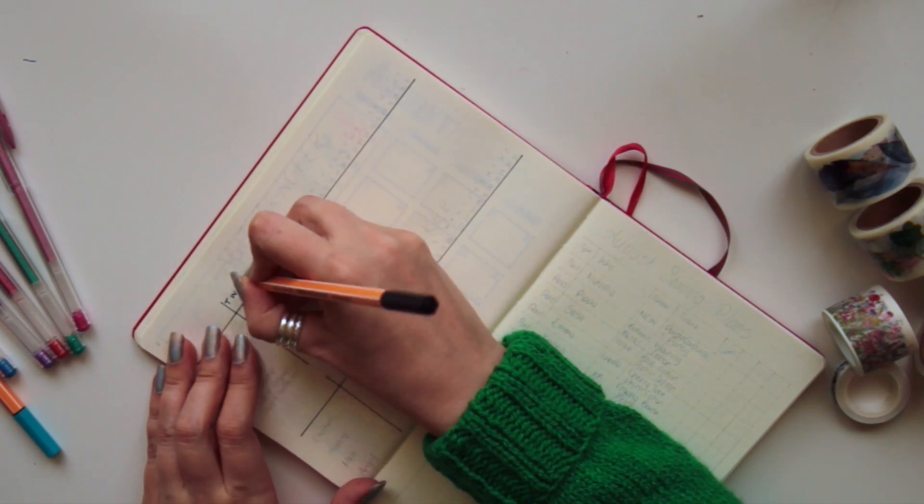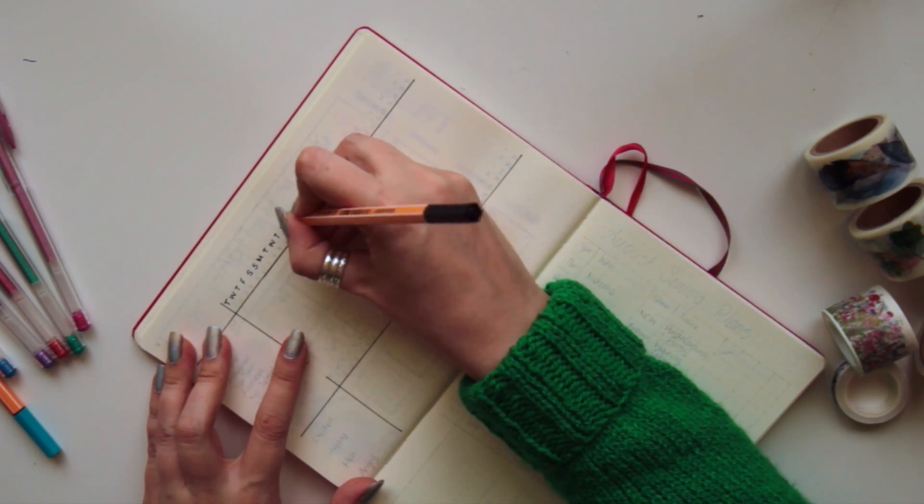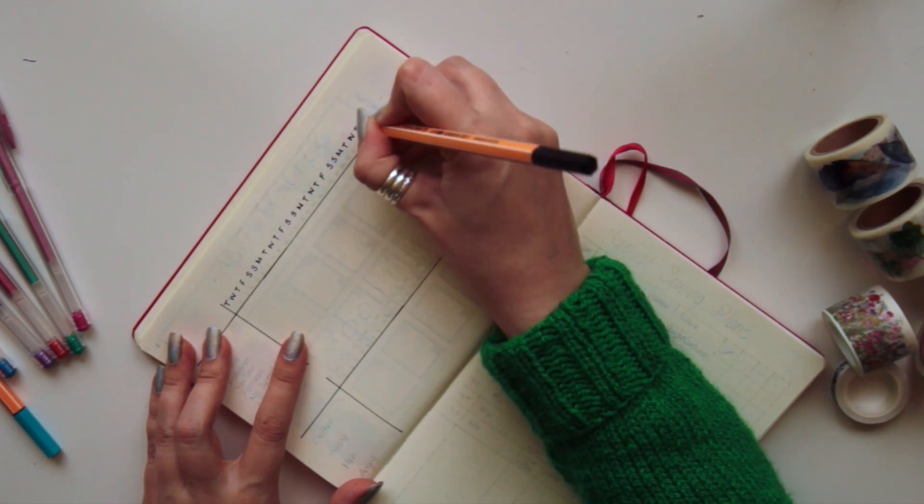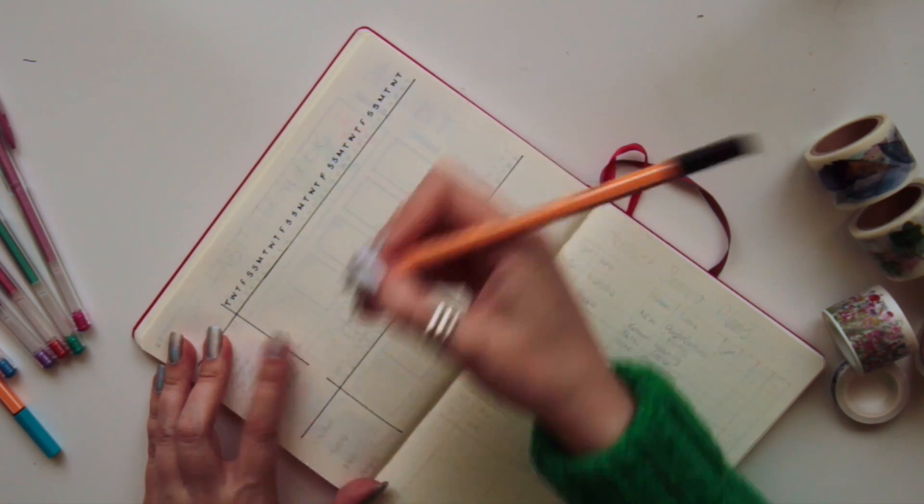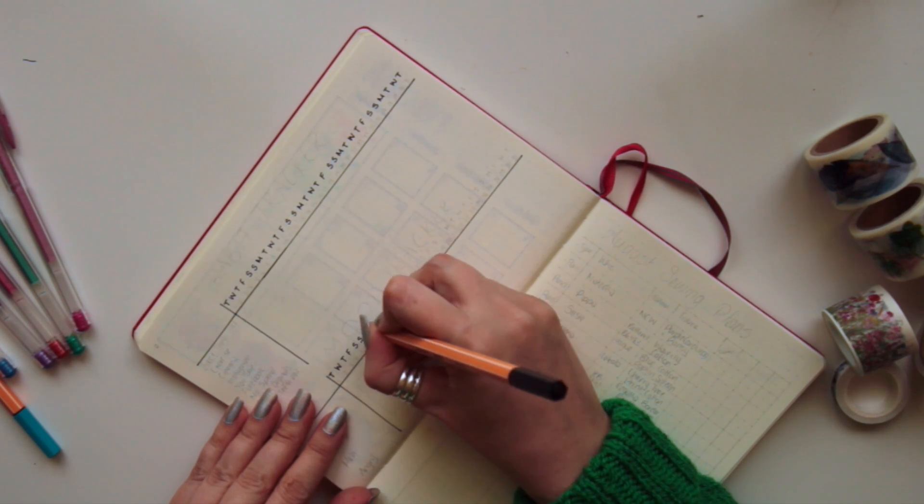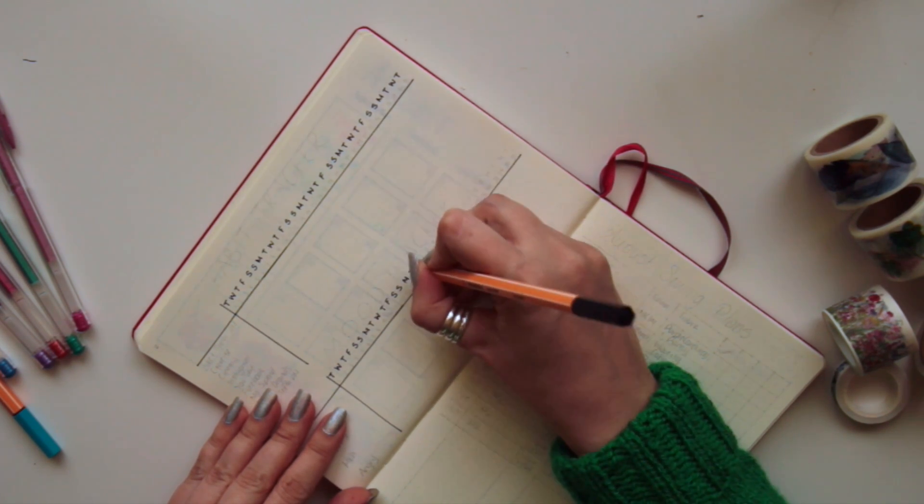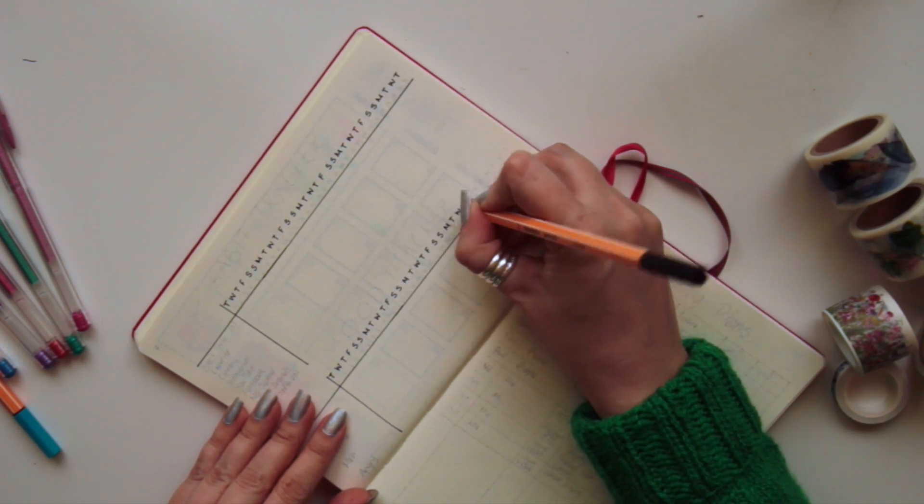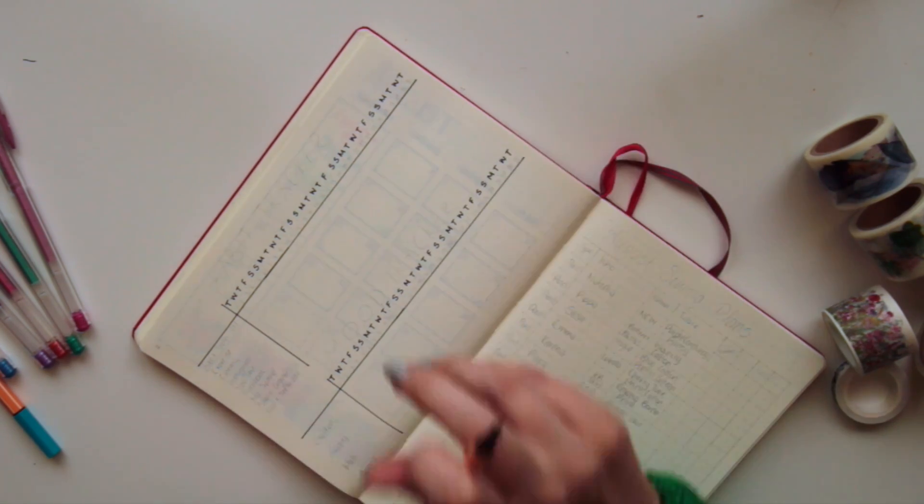I'm just checking what I did last month. In June I didn't put the days of the week in, I just put the dates, and I found that really confusing towards the end. So I'm adding in the days of the week and then I'm going to go through and put in the actual dates as well.